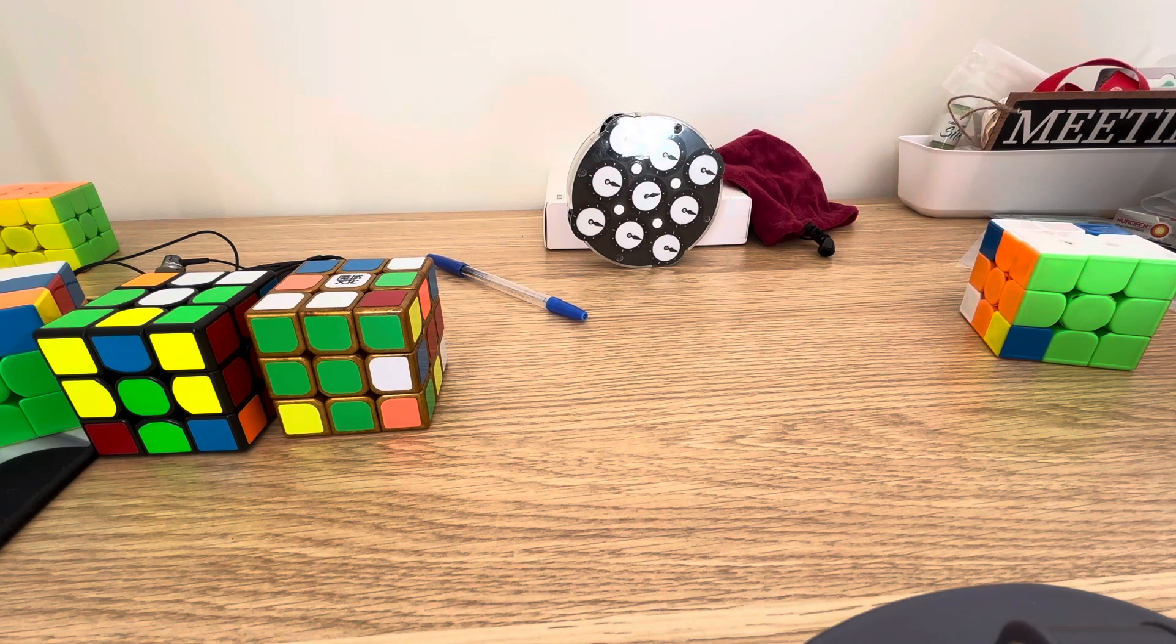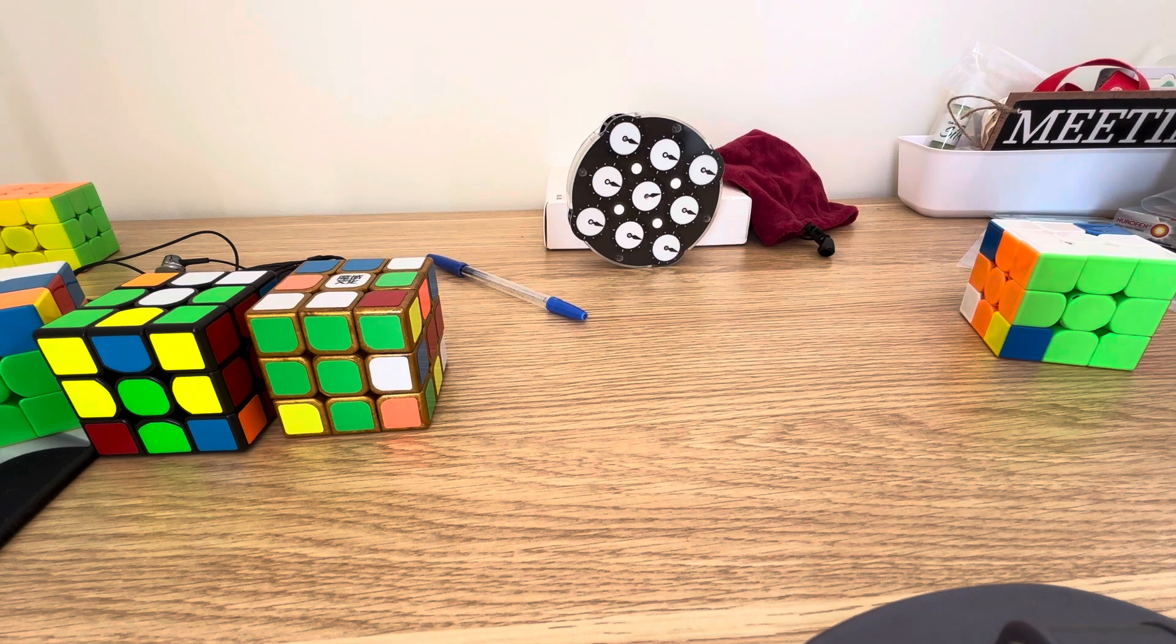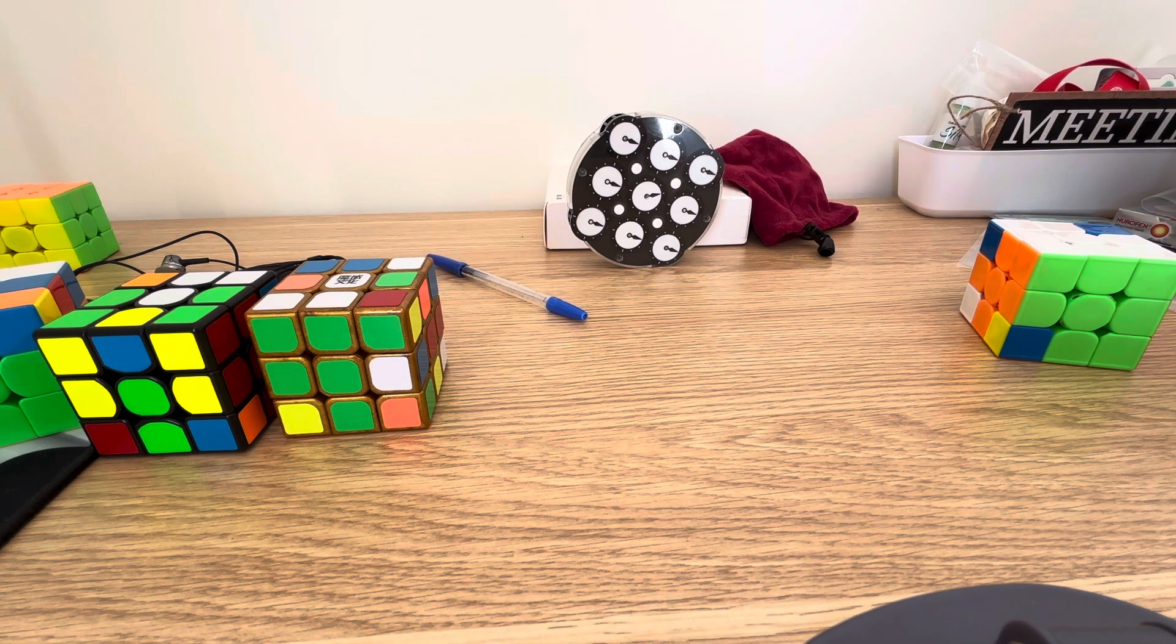But something funny did come out of this comp, which is that I got a 22 single on the first scramble of the first round of FMC West Melbourne, and it just happened to also be the best result on that scramble. Somehow I just got really lucky and beat even the DR users, which I'm really not this good.